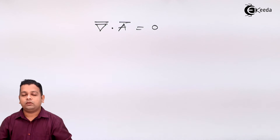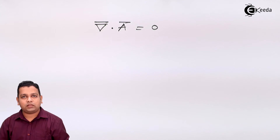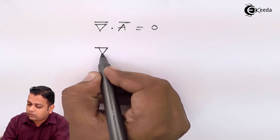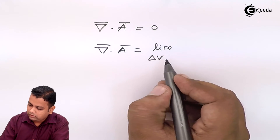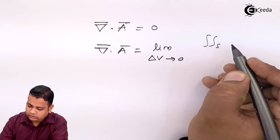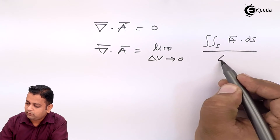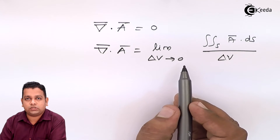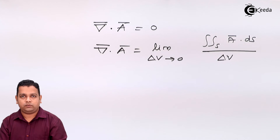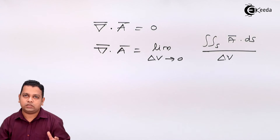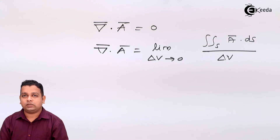Now let us have the effect of divergence in three-dimensional space. The mathematical representation of divergence of A in another form will be: limit as delta-V tends to zero of the closed surface integral of A-bar dot ds, upon delta-V. Here delta-V approaches zero. If we take the contraction of any volume, finally the end result will be at a point, and for a point we take into consideration that the volume is increasing — it will be in the form of geometrical shapes.